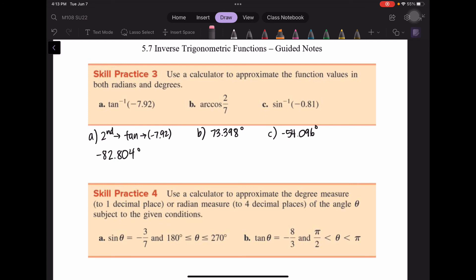Then I'm going to press the mode button to change my calculator into radians and approach the problem the same way. So for radians, for part a, I get negative 1.445. For part b, I get 1.281. And for part c, I get negative 0.944.